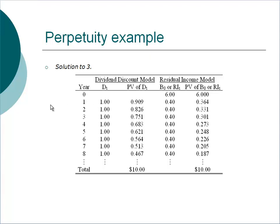Looking at the comparison table: under the dividend discount model, the company generates $1 in dividends every year, and discounting all of them to present gives $10. Under the residual income model, you start with book value of $6, then discount residual income of $0.40 per year forever, yielding $4, for a total of $10. It doesn't matter which model you use — you end up with the same conclusion.